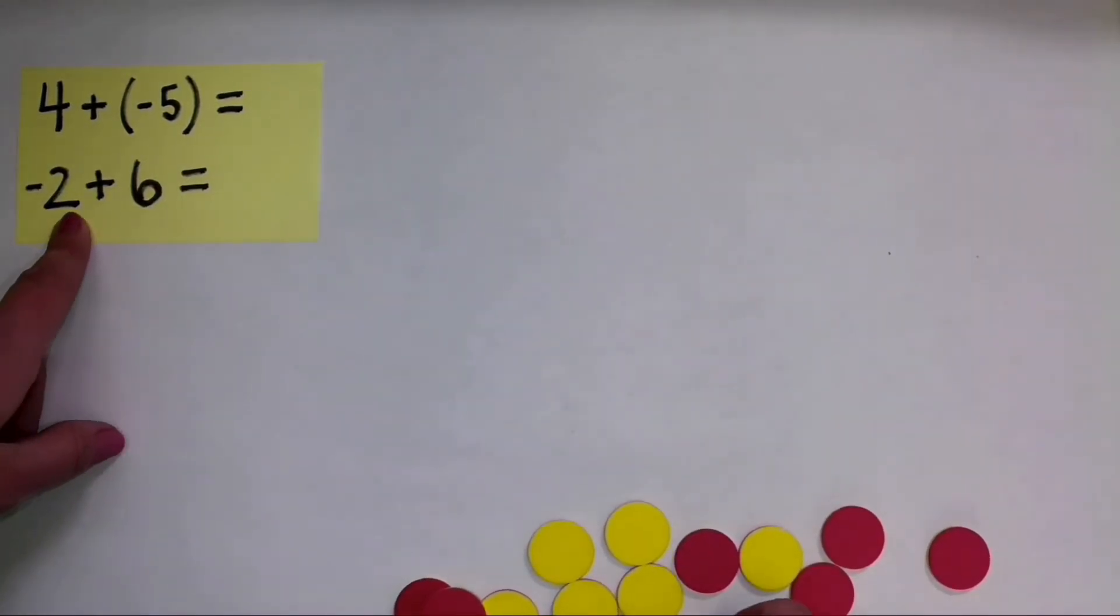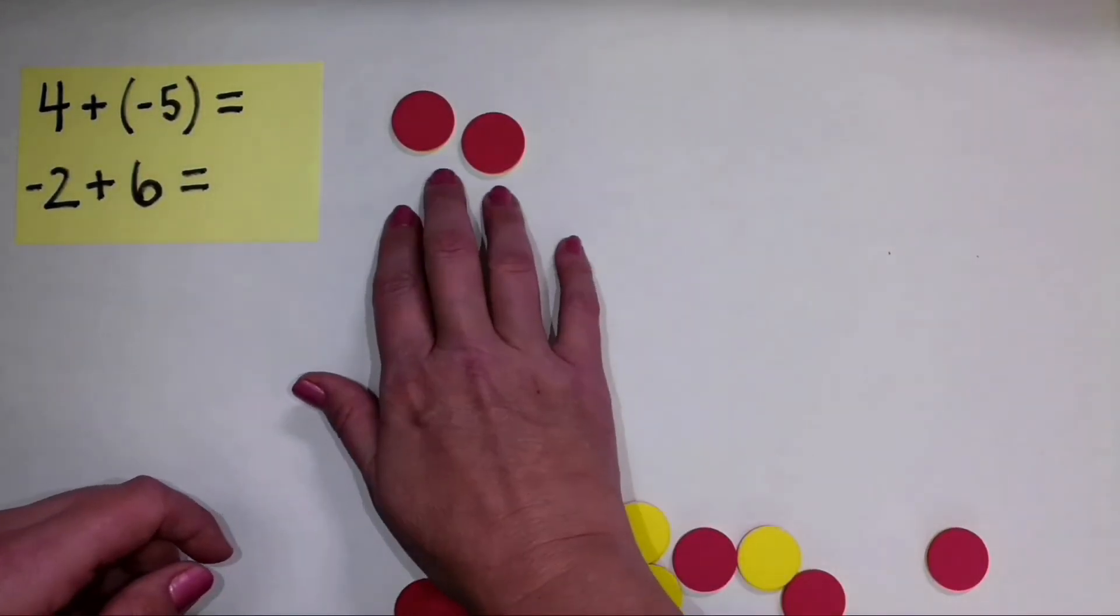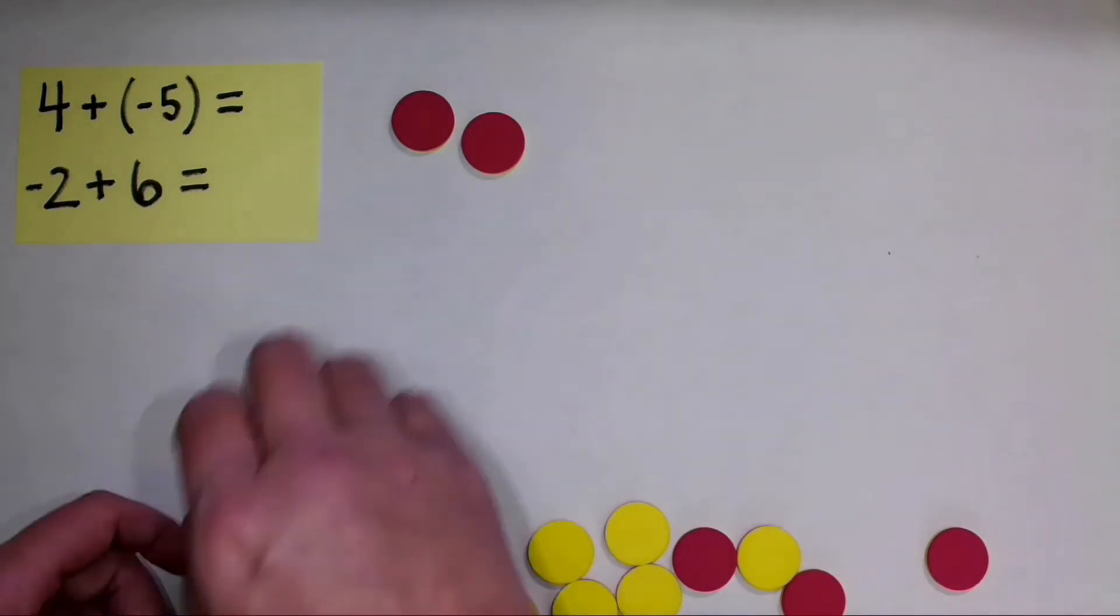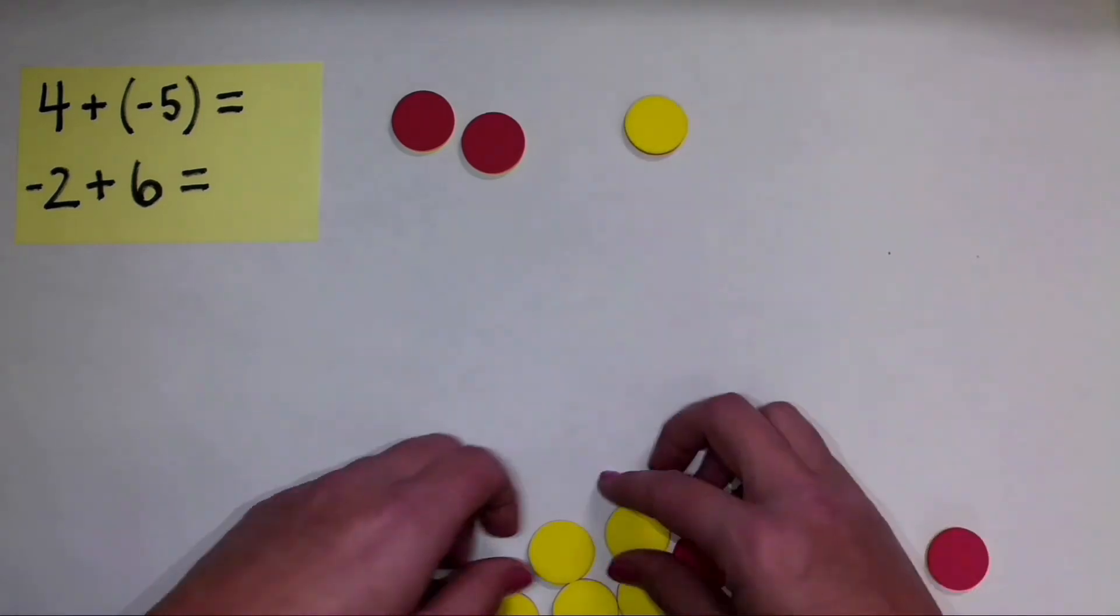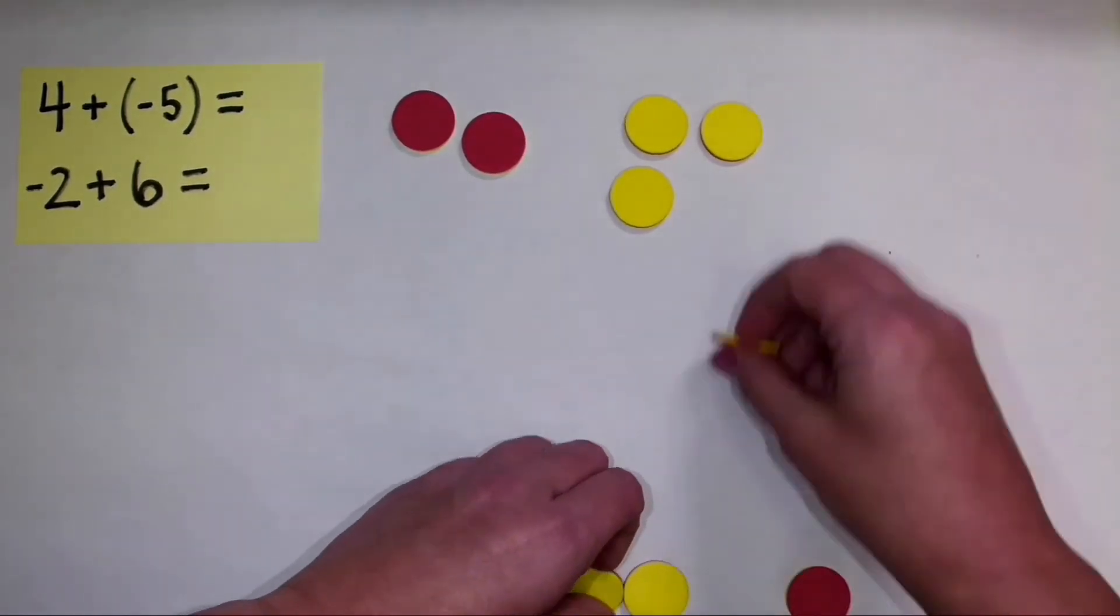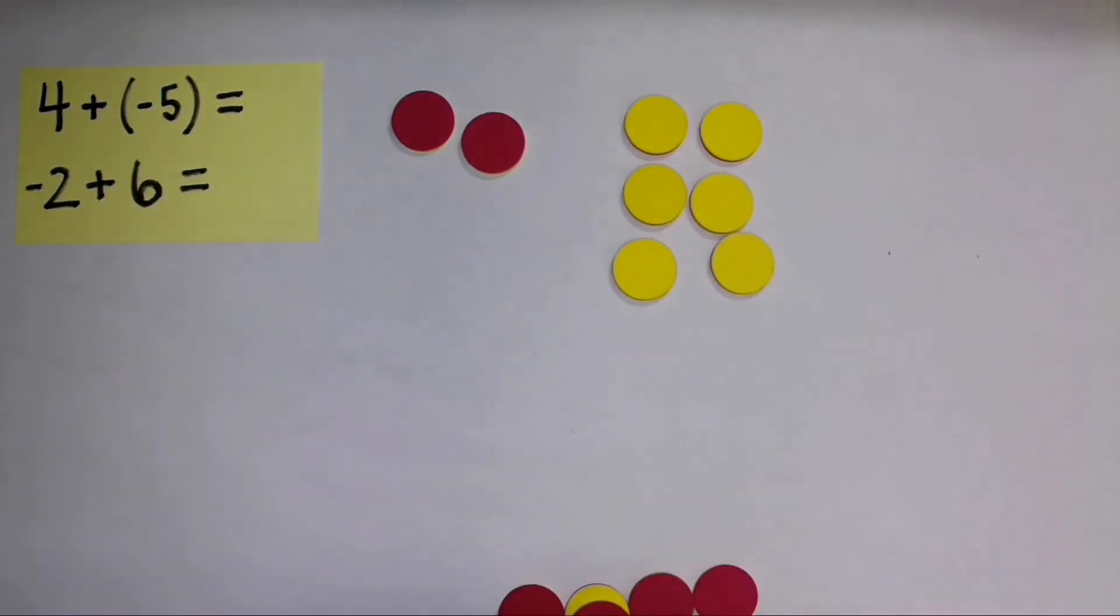Now let's look at this problem. Negative 2 plus 6. So I start with negative 2. Remember, my red side of the counters represents negative integers. And I'm going to add positive 6. So I'll go ahead and bring in my 6 counters there. And notice they're yellow. They all represent a positive amount.